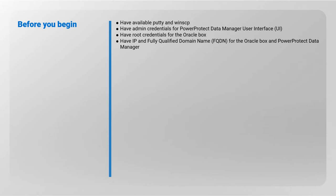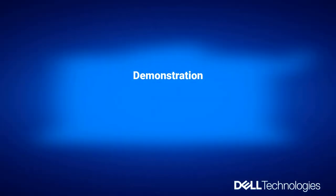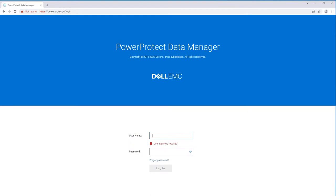Before you begin, have available PuTTY and WinSCP tools, have admin credentials for the PowerProtect Data Manager user interface, have root credentials for the Oracle box, and have the IP and fully qualified domain name for both the Oracle box and PowerProtect Data Manager. Login to PowerProtect Data Manager using admin credentials.